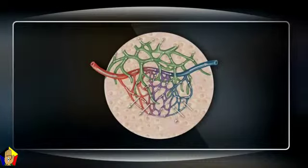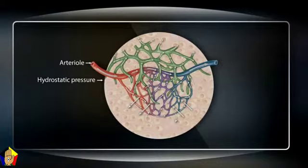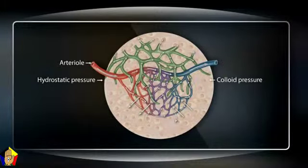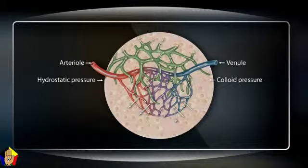Blood circulates from arteries to veins through the capillary bed. Blood pressure or hydrostatic pressure within the capillary bed, especially near the arteriolar end, forces fluid out into the tissue spaces. As blood continues toward the venous end, the colloid oncotic pressure of plasma proteins pulls fluid back into the vascular tree.